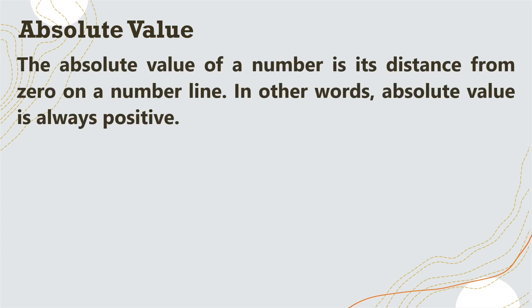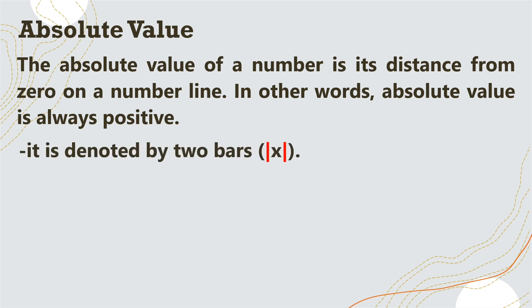Let us define first the absolute value. The absolute value of a number is its distance from zero on a number line. In other words, absolute value is always positive. So when we say absolute value, we are talking about the distance. That's why the absolute value is always positive. It is denoted by two bars, and x is the representation of any number. So this is the absolute value of x.